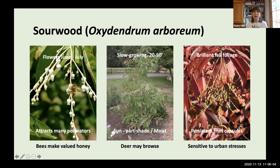Sourwood, Oxydendrum arboreum, is a slow-growing tree that will eventually reach 20 to 50 feet, growing in sun to part shade and moist conditions. It's recognized locally for its flowers — honey bees can make valued honey from it, and it attracts other native pollinators. In bloom from June to July, it takes on brilliance in fall with attractive foliage, and fruit capsules persist through winter into spring. Note: deer may browse tender growth, and it's more sensitive than other trees to urban stresses.